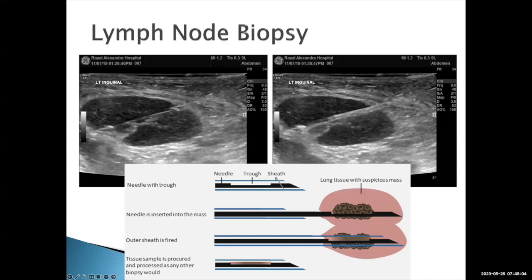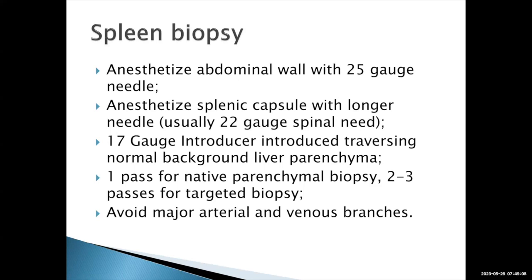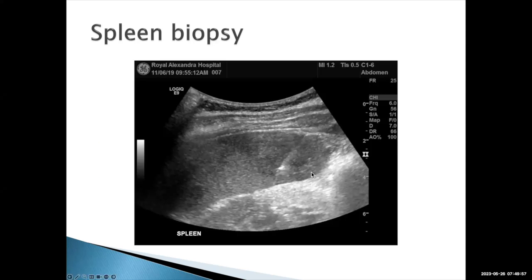Spleen biopsies have a bad reputation based on an older study showing very high bleeding risk. But in my experience and according to more recent literature, the complication rate is very similar to a liver biopsy. We anesthetize the abdominal wall and skin surface with a 25-gauge needle, then move to the splenic capsule with a spinal needle. Similar to the liver, we want to go through normal splenic tissue. We take one pass for a native parenchymal biopsy and two to three passes for a targeted biopsy, avoiding major arterial and venous branches.